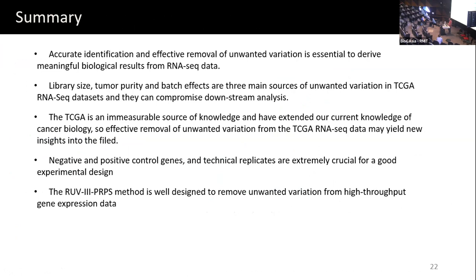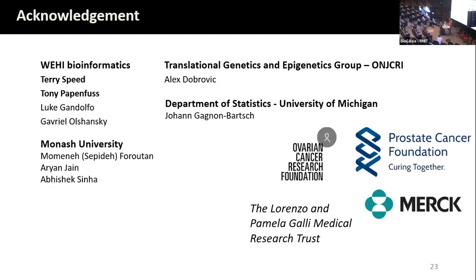The summary: TCGA is a great resource, but if you remove all those unwanted variation sources, you may find better results or novel results — which we have found a couple of ourselves. Negative control genes, positive control genes, and control samples are amazing for any experimental design. And the RUV-PRPS is one of those methods that can deal with datasets that don't have technical replicates. Thanks to everyone, especially Terry and Tony for the great help.